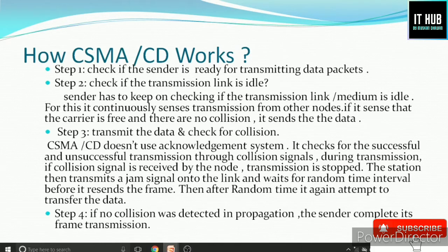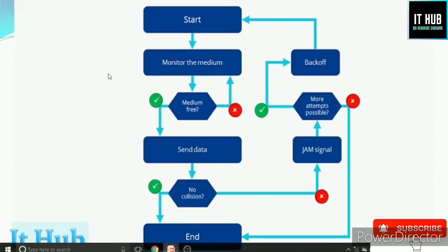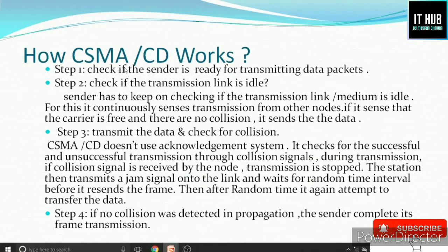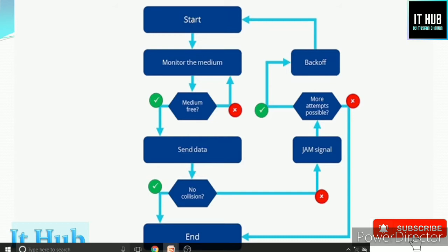Step 4: If no collision was detected during propagation, the sender completes frame transmission — the data will safely reach its destination. If the data packet is ready, the node senses the channel. If the medium is free, it sends its data. If the medium is not free, it waits and checks again. If there is no collision and no other node is using the channel, the data passes completely and the transmission ends. This is the best case scenario.